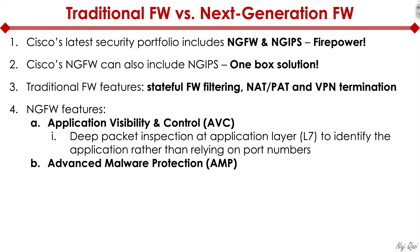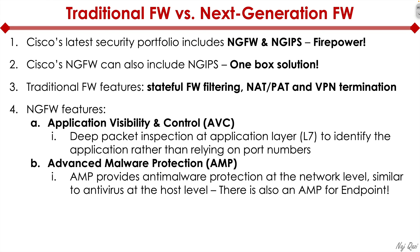Next-generation firewalls also include advanced malware protection, or AMP. AMP provides anti-malware protection at the network level — very similar to what antivirus does at the host level. There's also a version called AMP for Endpoints, which means you can use AMP on your machines as antivirus and anti-malware protection.